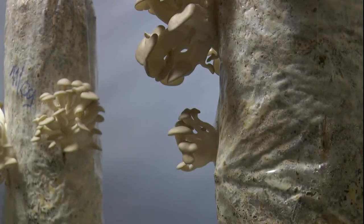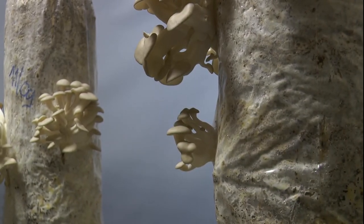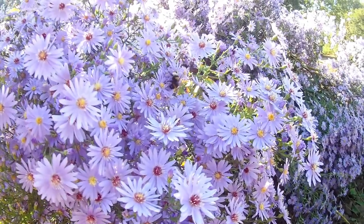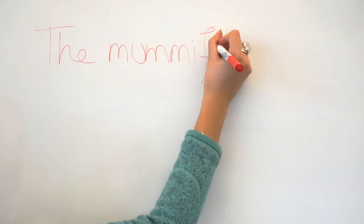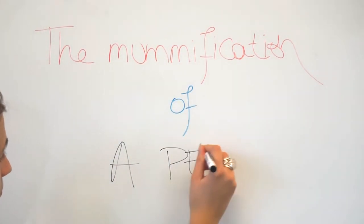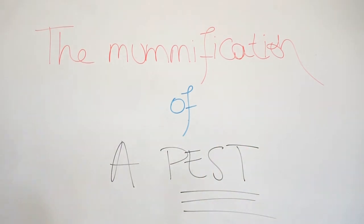These species — fungi, bacteria, or insects — are called auxiliaries. For example, we are going to show you the mummification of pests by a parasitoid wasp.